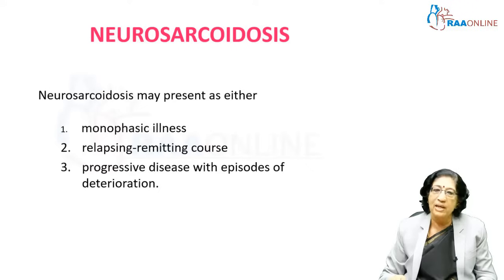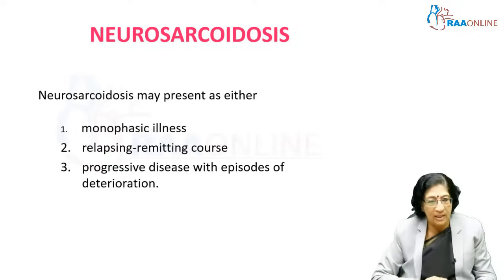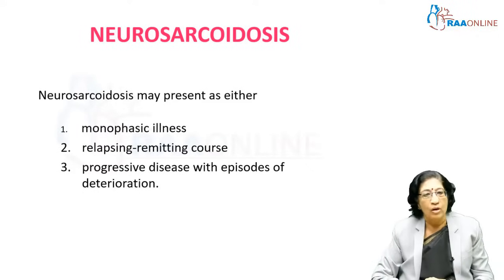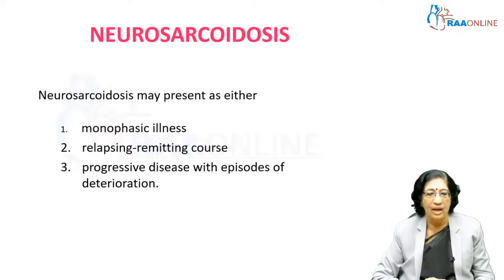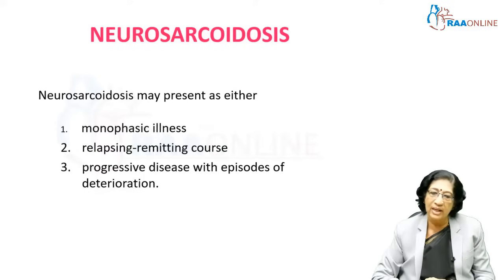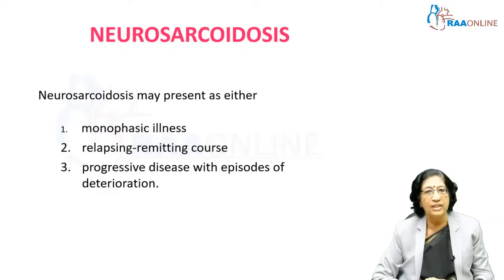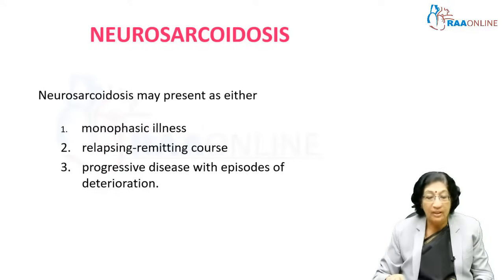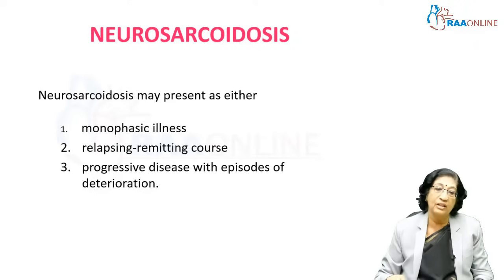Sarcoidosis can present as a monophasic illness, or neurosarcoidosis can follow a relapsing-remitting course — where patients have an illness, improve with treatment, remit, and stay remitted, or relapse after some time. Alternatively, it can be a progressive disease with episodes of deterioration, not relapsing-remitting but showing just progressive deterioration.